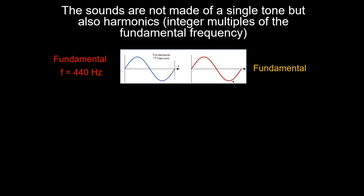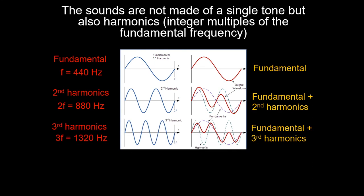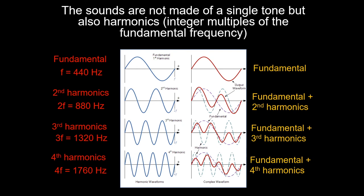The reason they are different is that the sound is not made of a single tone, but also of higher order frequencies known as harmonics. If the fundamental frequency is 440 Hz, then the second harmonic will be 880 Hz, the third harmonic is 1320 Hz, and the fourth harmonic is 1760 Hz, and so on. We can see that the waveform will change depending on how much fundamental and harmonics are generated from the instrument.